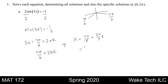Same thing goes for this equation. This solves the first part of the question, determining all solutions. The specific solutions on 0 to 2 pi will include a few extra values — not only 7 pi over 18 and 11 pi over 18, but some extra values for different values of k.